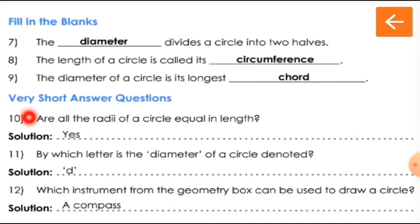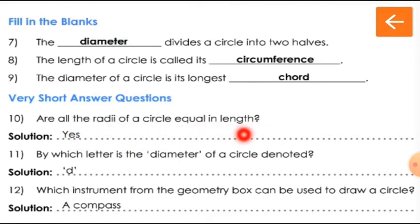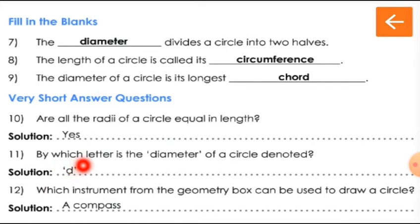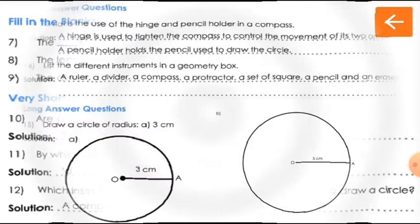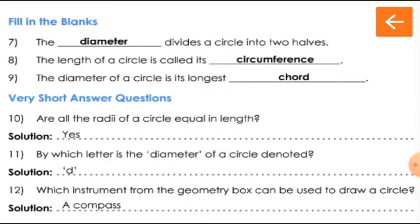Now the very short answer questions. Question 10: Are all the radii of a circle equal in length? Yes, all the radii of a circle are equal in length. Question 11: By which letter is the diameter of a circle denoted? The answer is D — small letter d. We can use the small letter d to denote diameter.